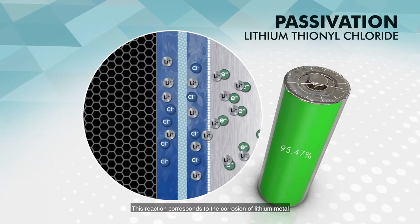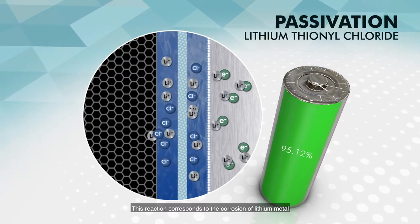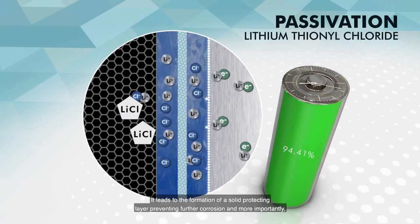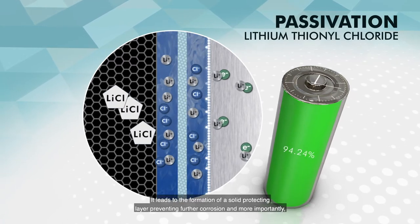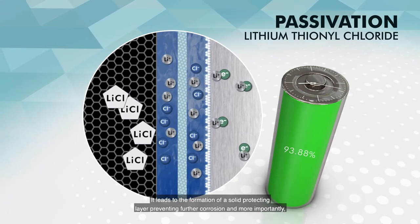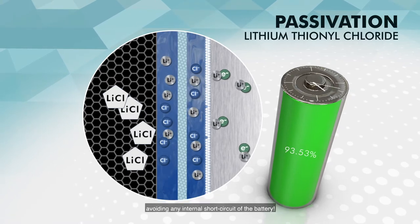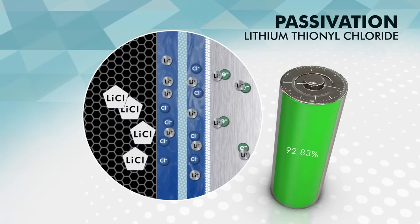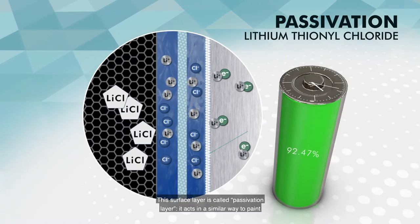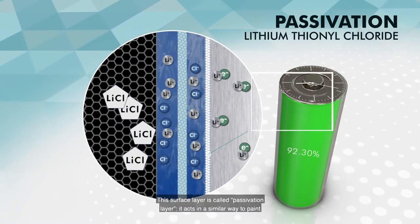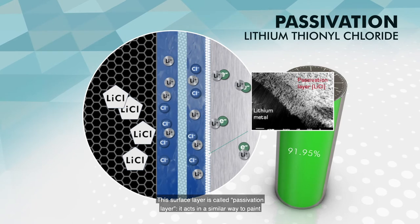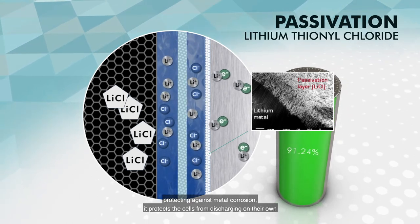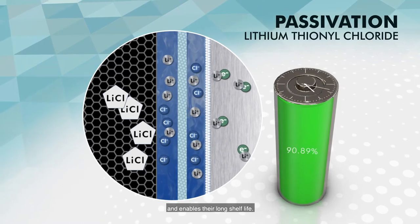This reaction corresponds to the corrosion of lithium metal by liquid thionyl chloride into lithium ions. It leads to the formation of a solid protecting layer preventing further corrosion and, more importantly, avoiding any internal short circuit of the battery. This surface layer is called a passivation layer. It acts in a similar way to paint, protecting against metal corrosion, protecting the cells from discharging on their own and enabling their long shelf life.